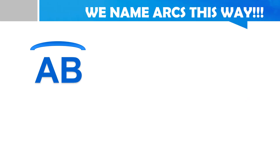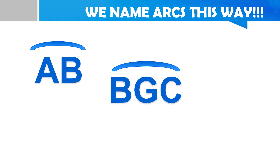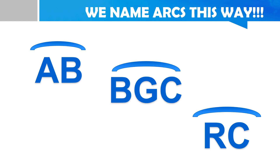We name arcs this way: Arc AB, Arc BGC, and Arc RC. Remember that Arc AB can be interchanged to Arc BA, Arc BGC can also be written as Arc CGB, and Arc RC is also the same as Arc CR.